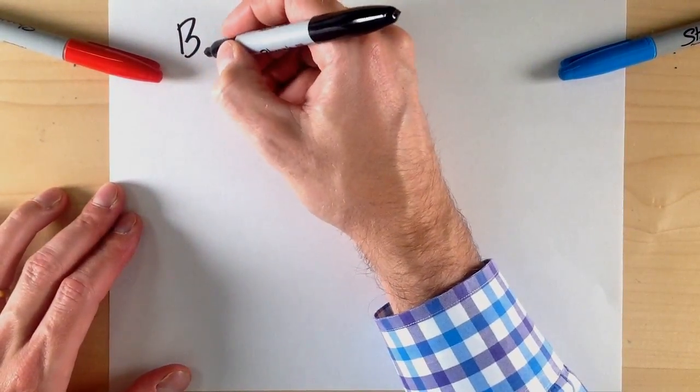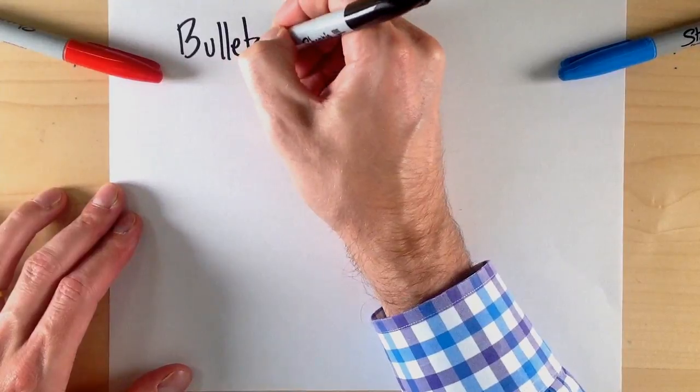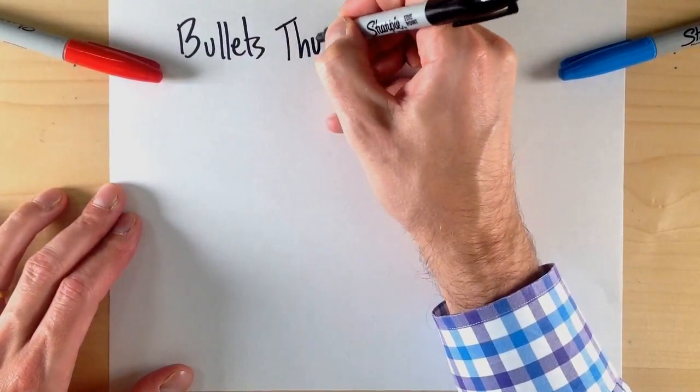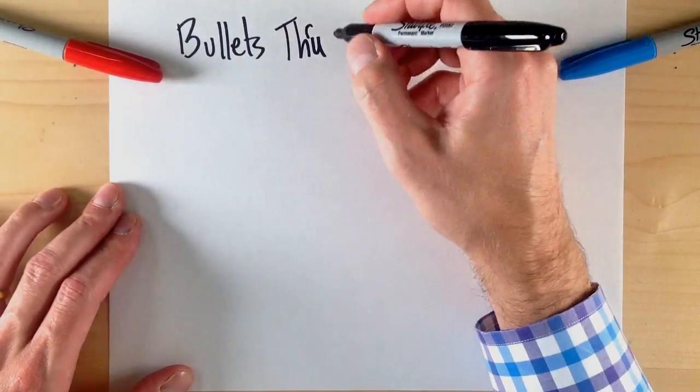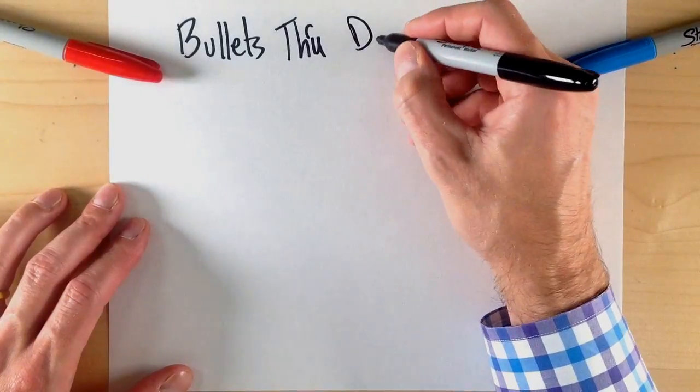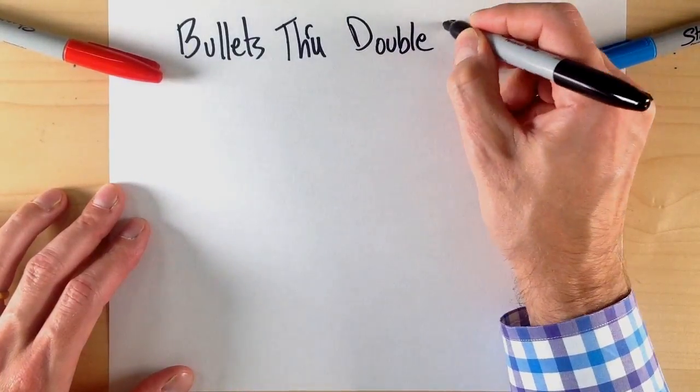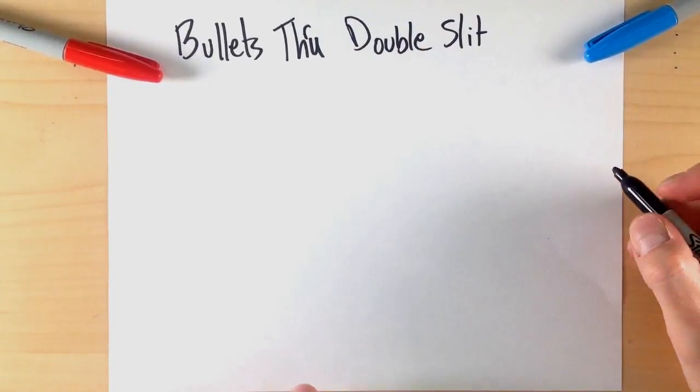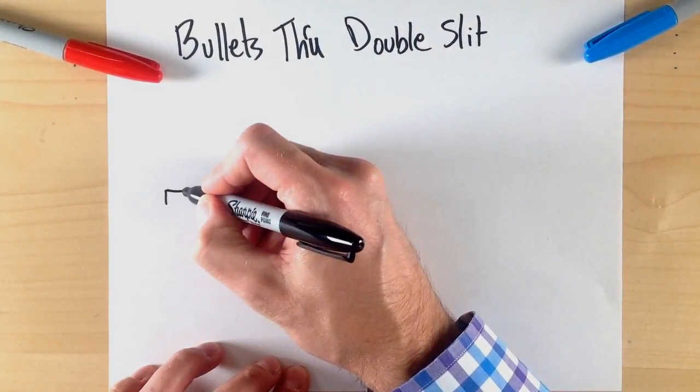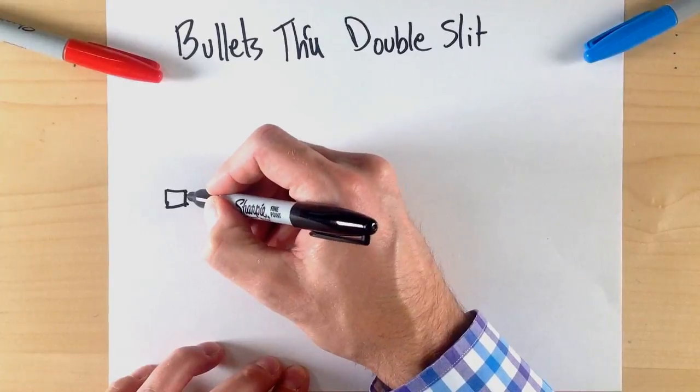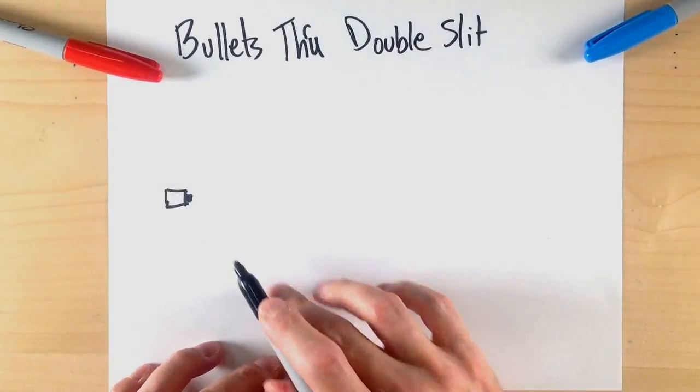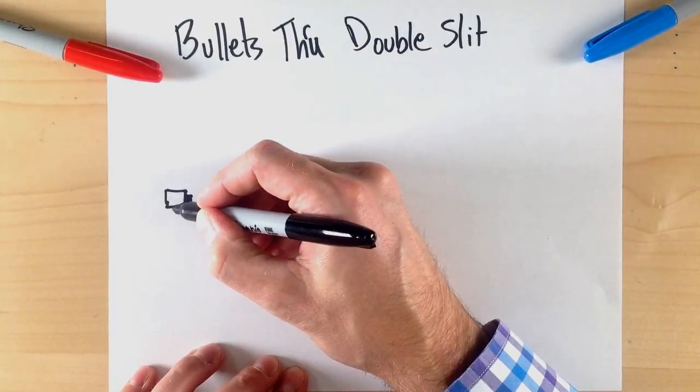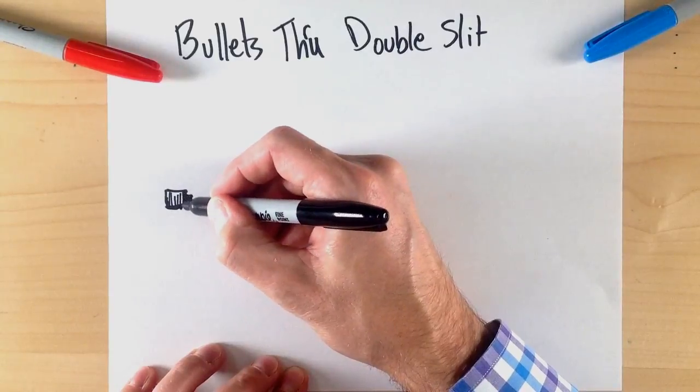So let's review what we know. Let's consider the case of bullets, in other words, hard particles through a double slit. And I do encourage you to write this in your notes. It'll help you remember—it's really an important aspect of learning. So let's suppose that we have some kind of gun.